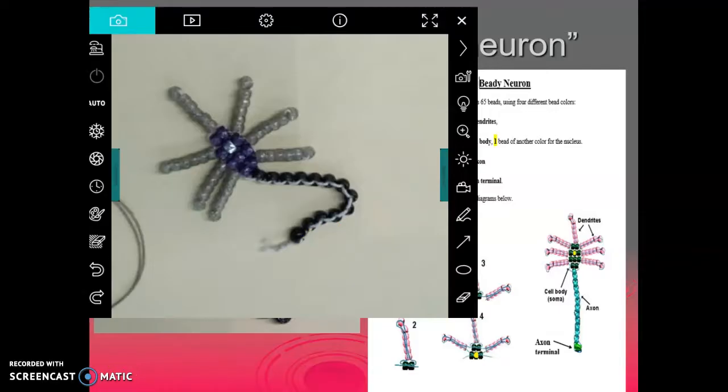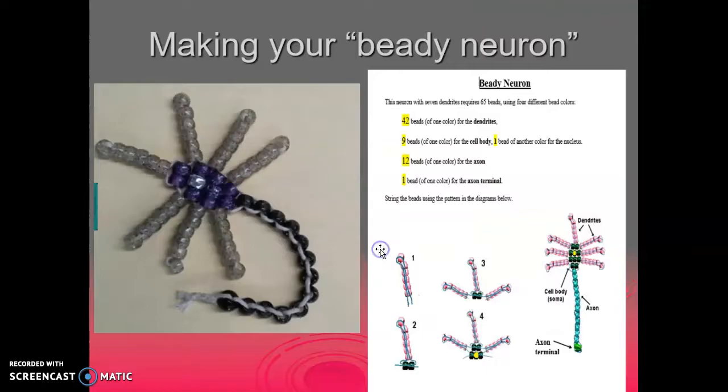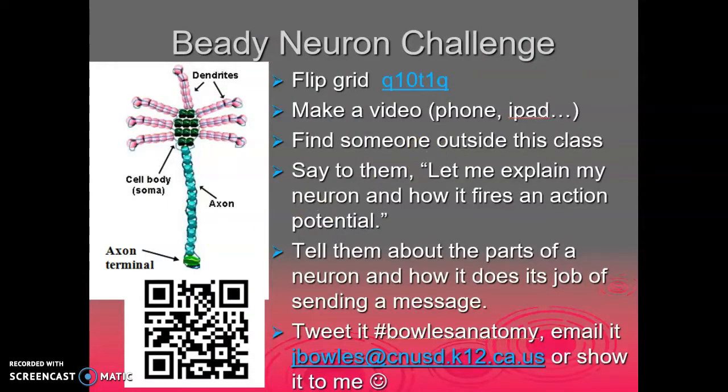Good luck with your beady neuron. And once you get finished with your beady neuron, what you're going to do next is you're going to be competing or working on the neuron challenge. So you're going to use your beady neuron to go ahead and talk about it. You're going to be learning how an action potential is fired and what occurs during that process. And that's what your beady neuron's for. It's for using it to describe through Flipgrid. All right, good luck with your beady neuron challenge.